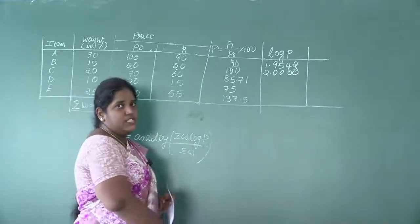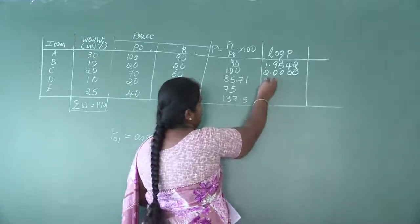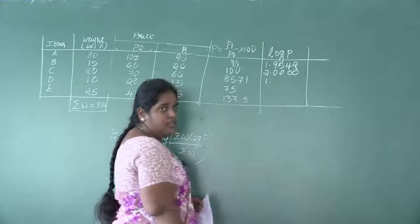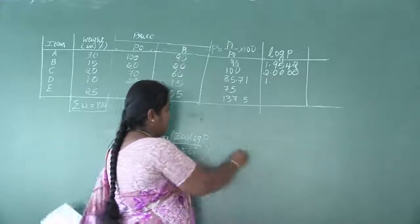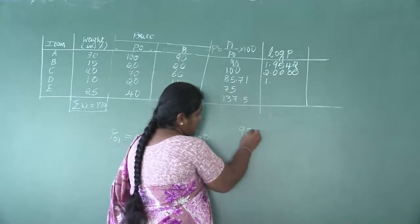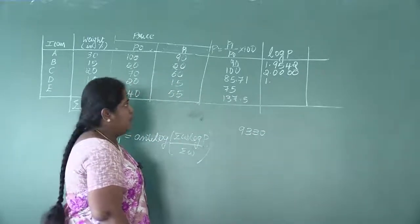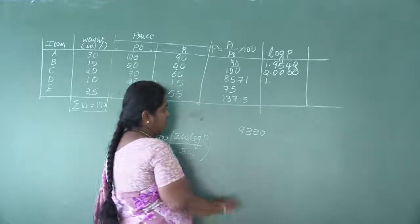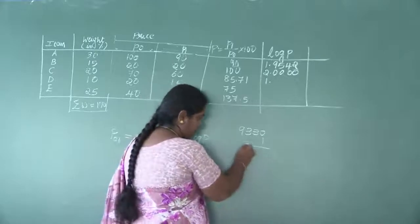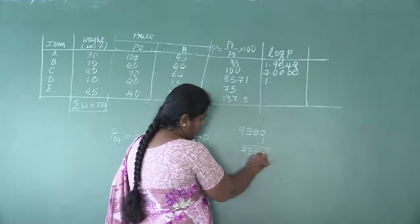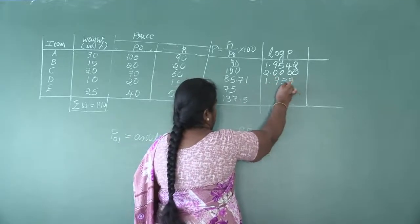For 85.71: it is a two-digit number, characteristic is 1. See the table value for 85 under 7, which gives 9330. For mean difference 1, the value is 1. So 9330 + 1 = 9331, giving log 85.71 = 1.9331.